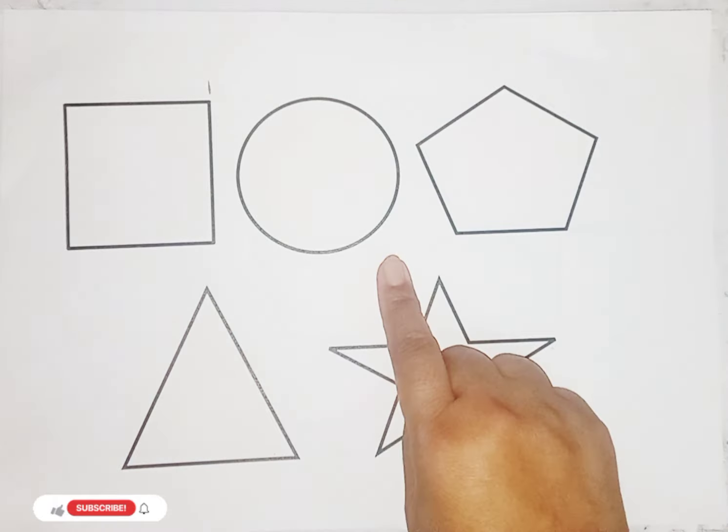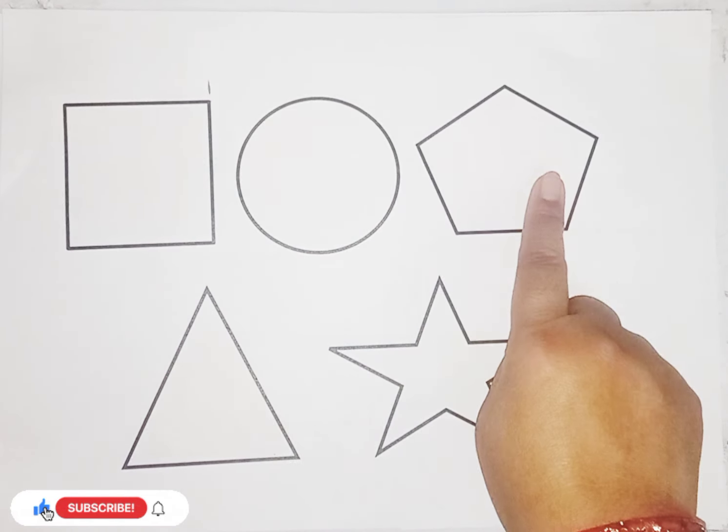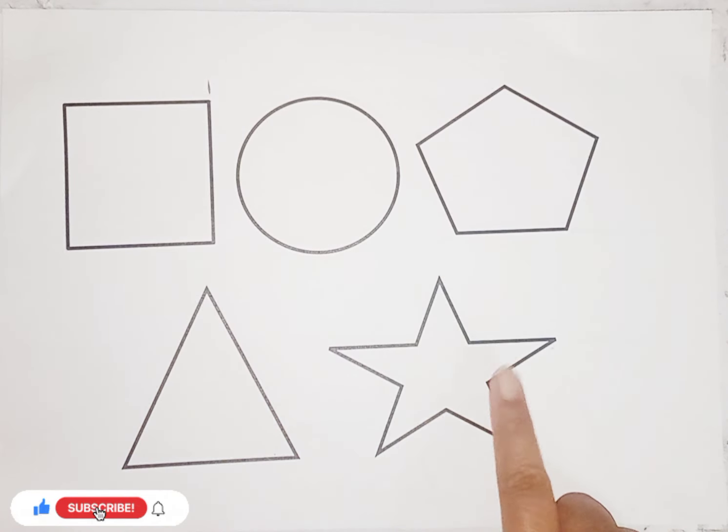So kids, today we learn some 2D shapes: square, circle, pentagon, triangle, star.